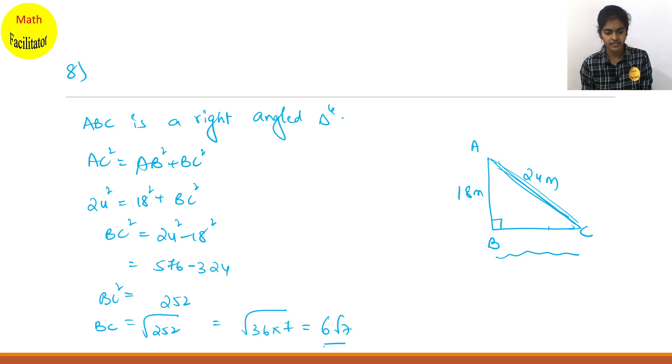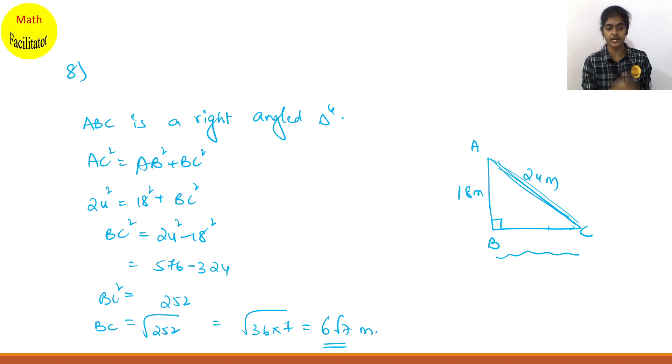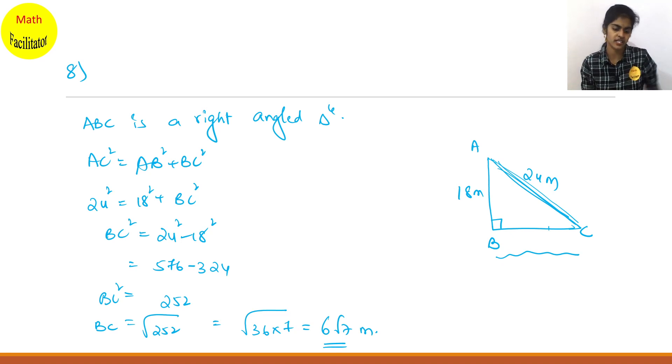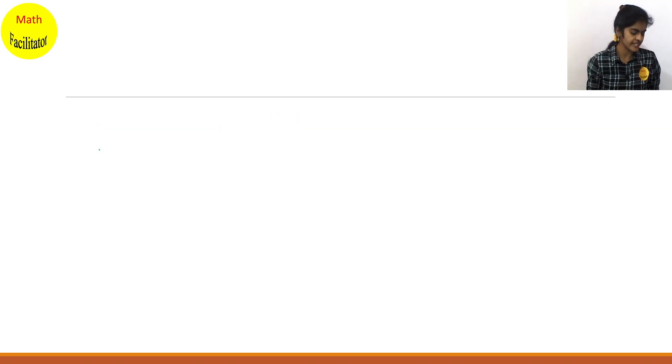BC square is 252. BC equals root over 252. If you prime factorize, you will get root 36 into 7, which gives 6 root 7. In class 8 you have learned how to find square roots — it's the same concept. Let's move on to question number 9.